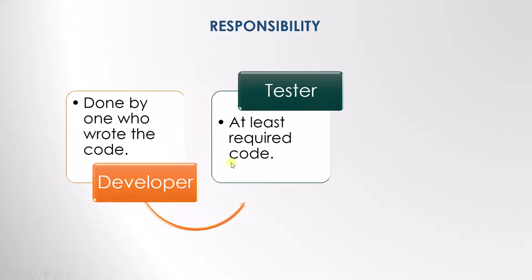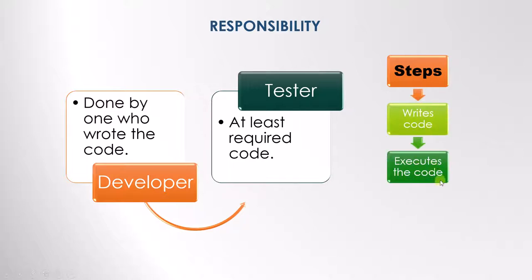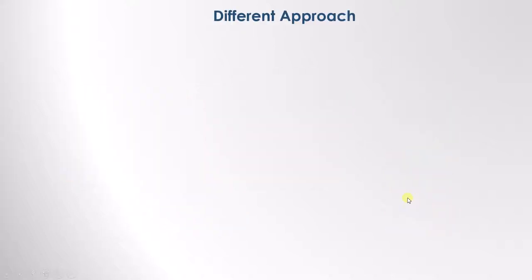Now, what are the steps involved in component testing? First, we write the code. Then we execute the code. This lets us find defects. Once we find the defects, we fix them. And then we'll execute the code again. We will continue this cycle until no more defects are found. This is one way to do the testing. There is also a different approach.